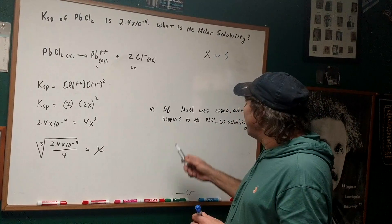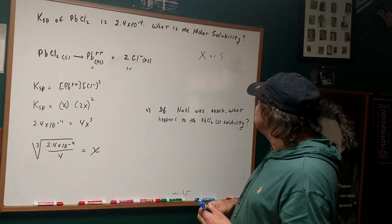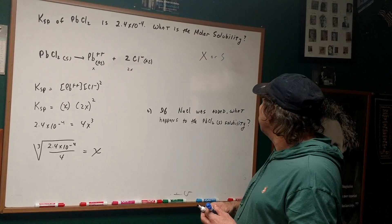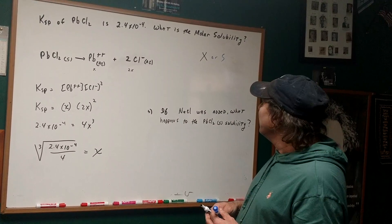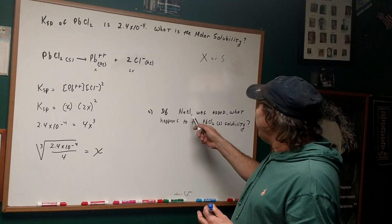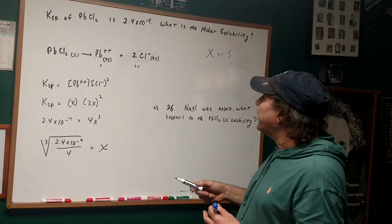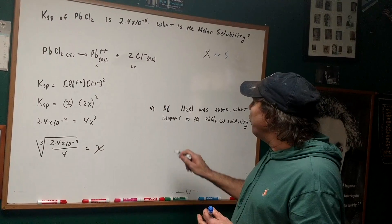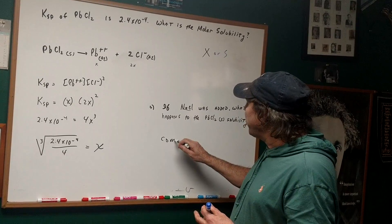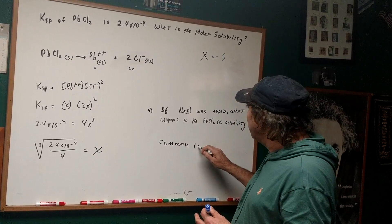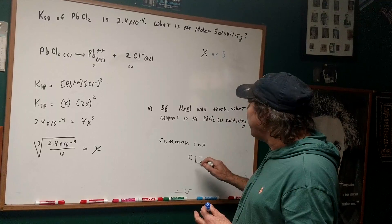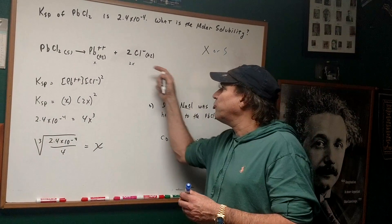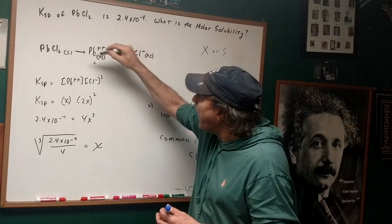Part B is an interesting question. It says if NaCl was added, what happens to the solubility of the lead chloride? What I would do here is if you're adding NaCl, we're dumping in a common ion. The common ion is going to be Cl-. If you add additional Cl-, it's going to shift the equilibrium to the left.